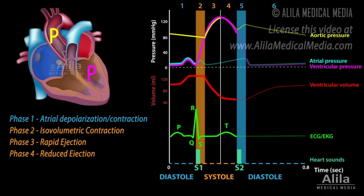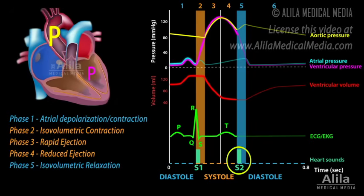When ventricular pressures drop below aortic and pulmonary pressures, the semilunar valves close, marking the end of systole and beginning of diastole. Closure of semilunar valves produces the second heart sound, S2. The first part of diastole is, again, isovolumetric, as the ventricles relax with all valves closed.